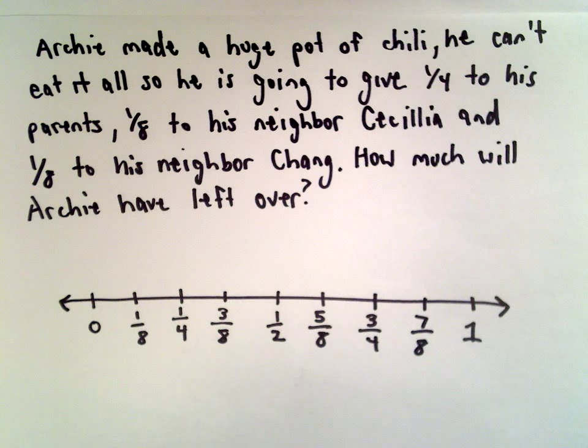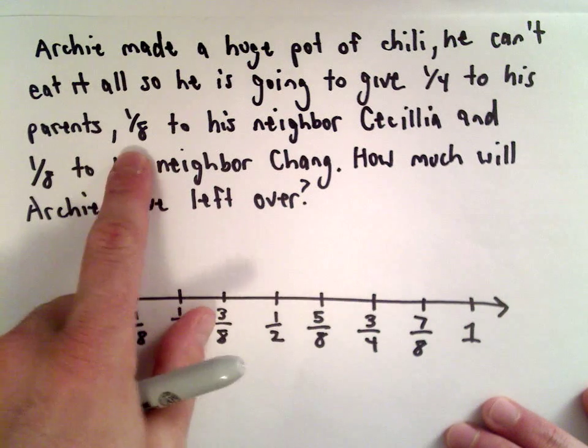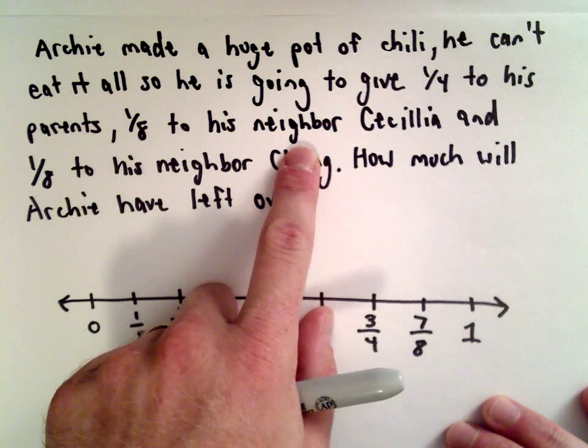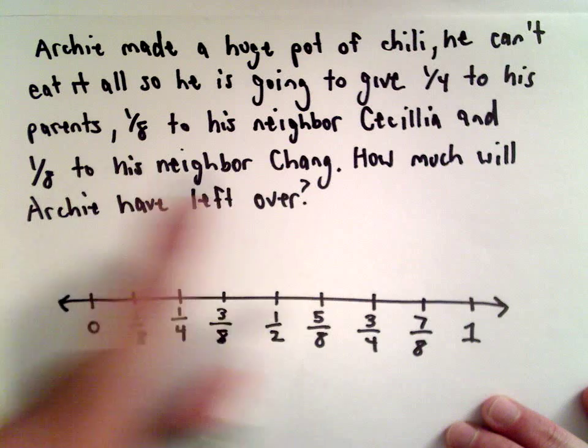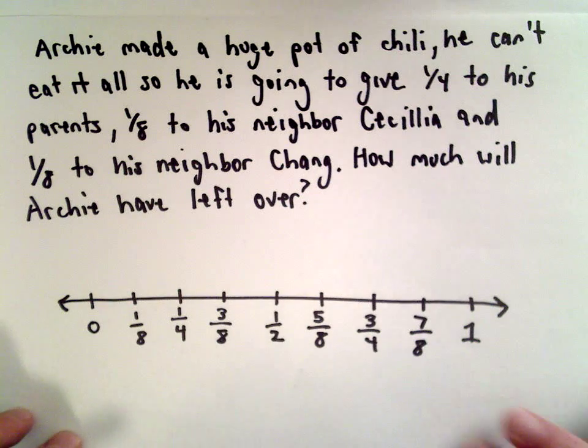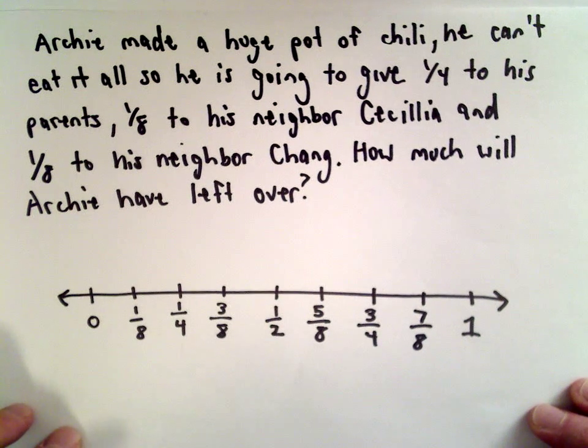Okay, so Archie made a huge pot of chili, and he can't eat it all, so he's going to give one-fourth of it to his parents, one-eighth of it to his neighbor Cecilia, and another eighth of it to his neighbor Chang. We want to know how much will Archie have left over.